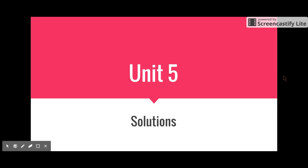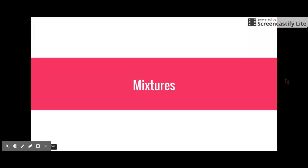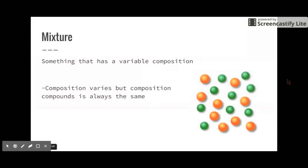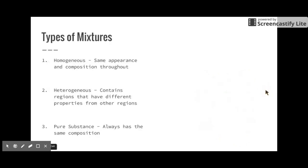We're going to be talking about mixtures in this lesson. A mixture is something that has a variable composition. Here is something that has a variable composition — you can see it's made out of two different things. The composition of the mixture may vary; however, the compounds in the mixture always have the same composition. You can see there's a bunch of green particles and a bunch of orange particles here.